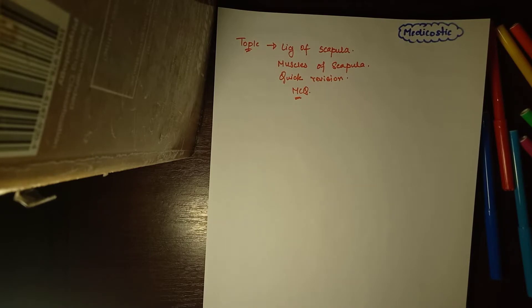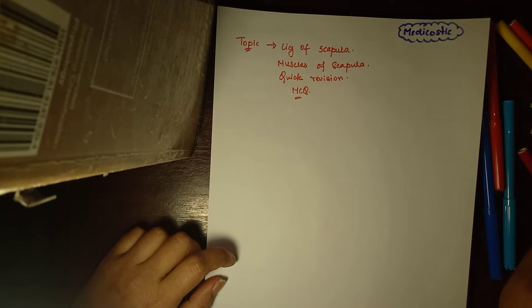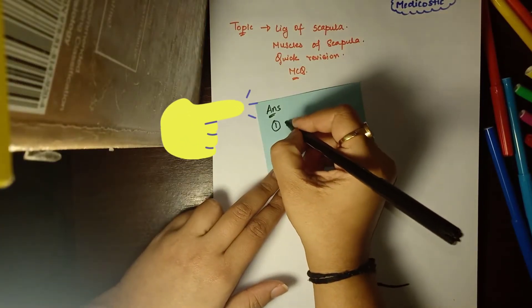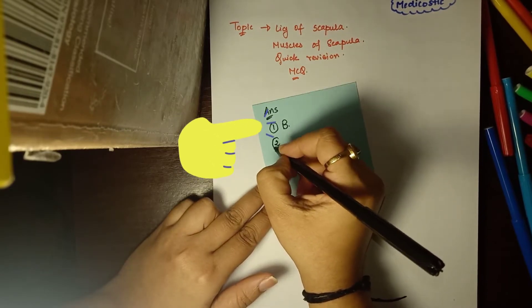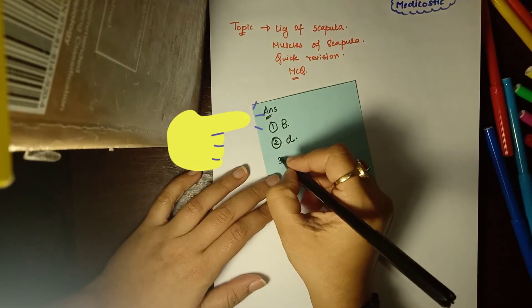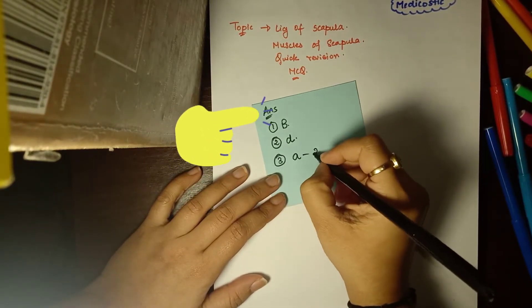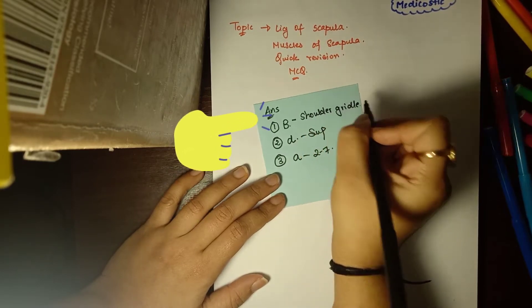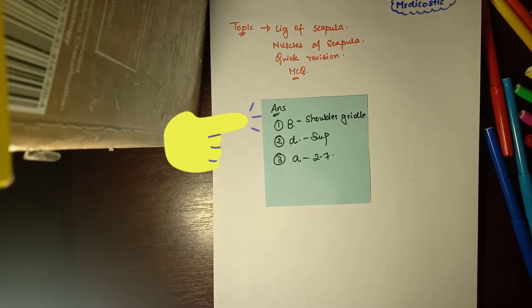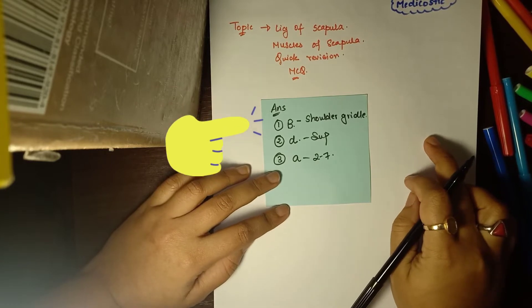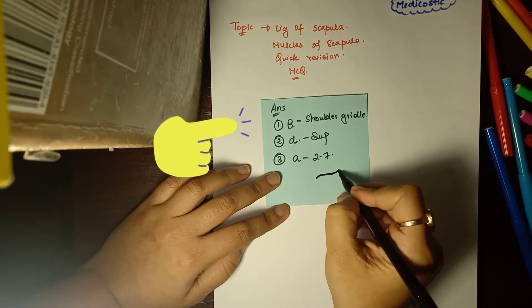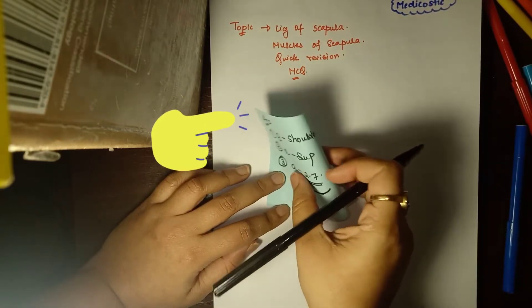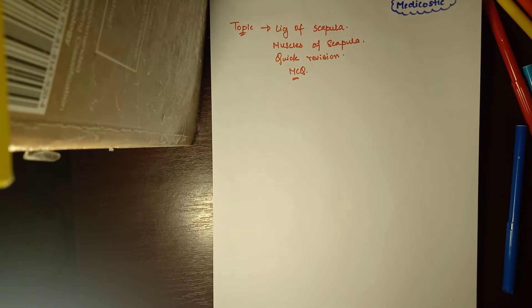Before starting, I will give you the answers to the MCQs from anatomy of scapula part 1. The first answer is B, the second is D, and the third is A - which is 2 to 7, the superior border, and shoulder girder. The other name of the scapula is shoulder girder. The superior border is the smallest and thinnest border because it lies on the upper side of the scapula, and 2 to 7 is the answer for where the scapula is located.